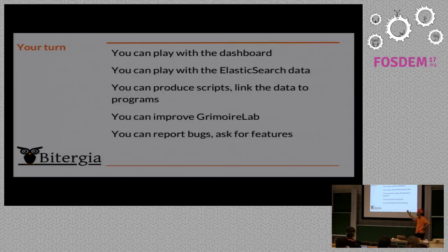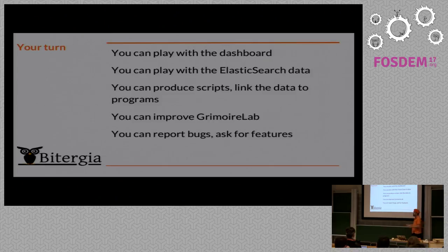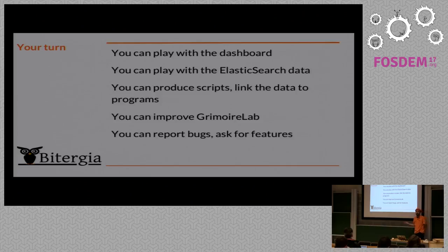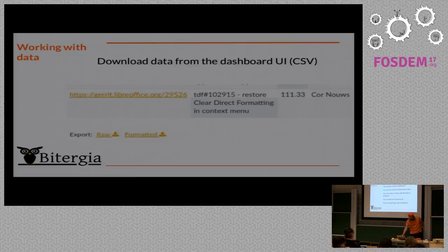Now for your turn — how you can play with the dashboard. You can go to the dashboard, find information, and look for yourself to see whether it corresponds to what you did. You can play with the data; currently you need a password, but you can ask the foundation and they are very interested in developers using this information. You can produce scripts and link the data to programs. And of course you can collaborate to improve GrimoireLab, spot problems, or report bugs.